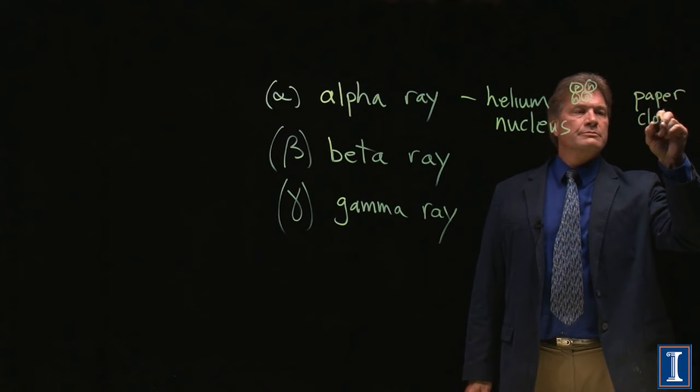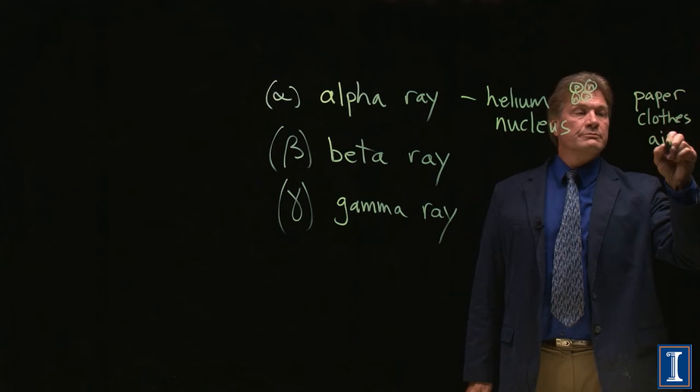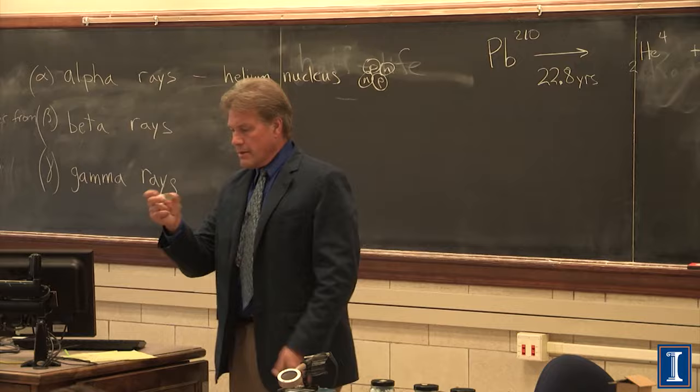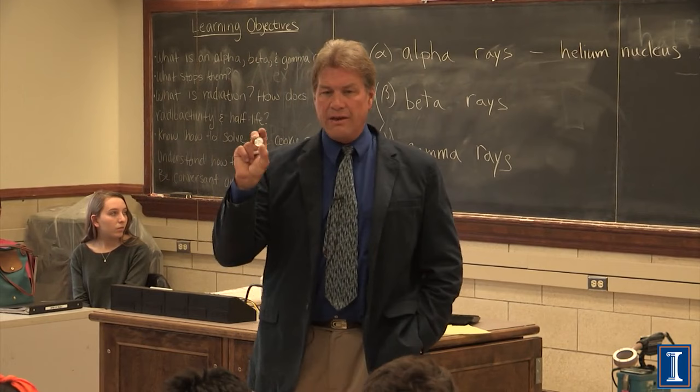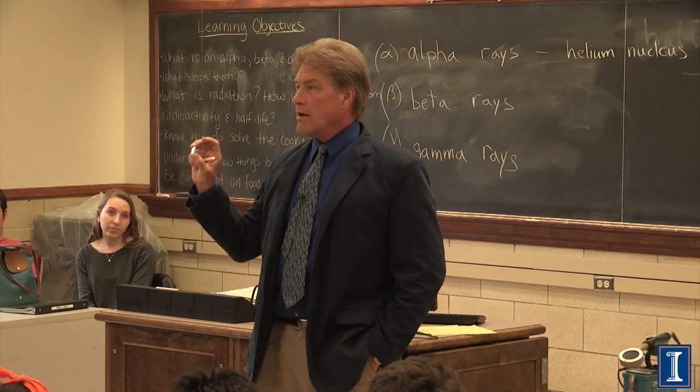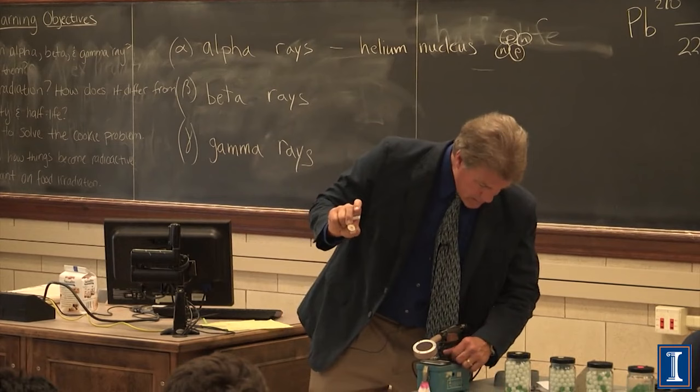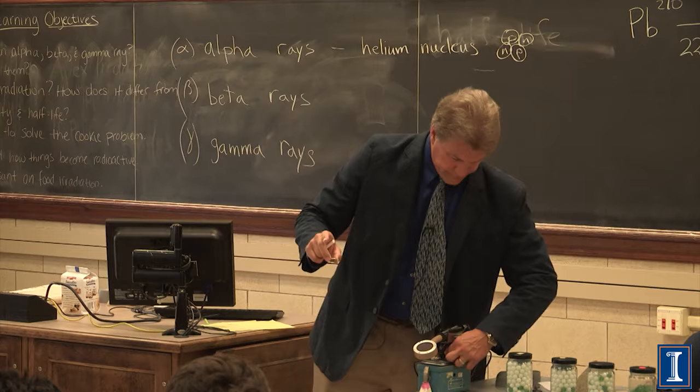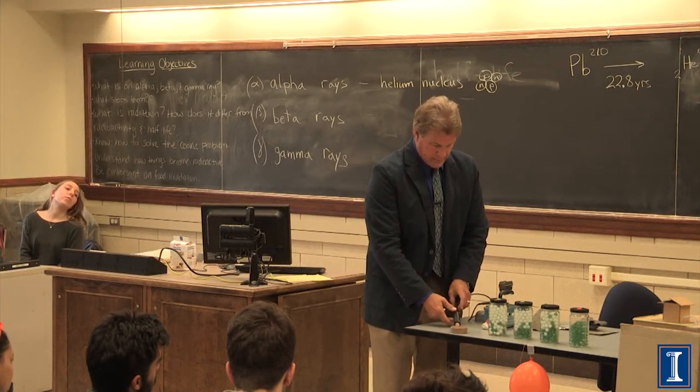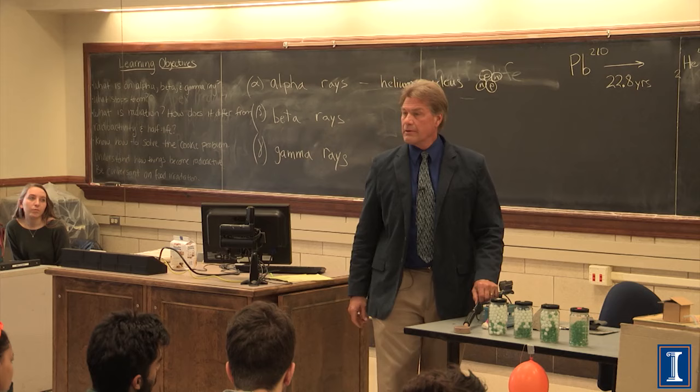This helium nucleus could be stopped by something as simple as a couple sheets of paper, or your clothes, or enough air. Easy to stop. Here's a demonstration of an alpha emitter - a lead-210 source. The lead-210 will change into mercury-206, and in that process emit an alpha particle.